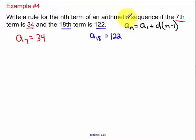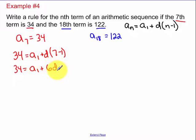So fill in what you know. Remember a sub n stands for the value of that term. The value of that term is 34. a sub 1 we don't know. n is 7, because that's our term number. Our value of our 18th term is 122. We don't know our first term. We don't know the common difference. And now we know that n is 18, because that's our term number.